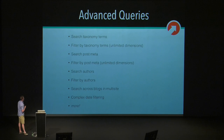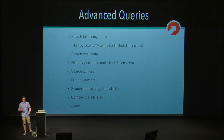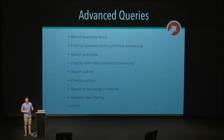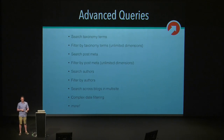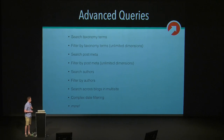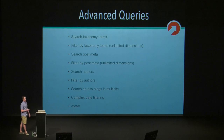With ElasticPress, we can do a lot of really powerful advanced queries. We can search taxonomy terms — how many times have you had a client that wanted to search their categories and tags when they search their website? We can search post meta and filter by those things. We can actually search authors and filter by authors. We can search across blogs in a multi-site. A lot of really powerful functionality.